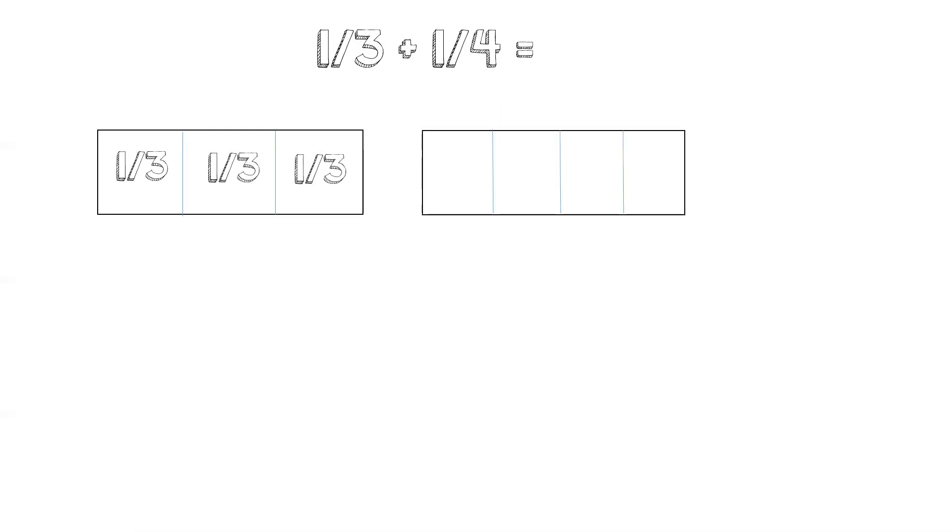Let's do another one. We have one-third plus one-fourth. Again, we have a three and a four, and we can't add them, because the denominators are different. So you can see here, these are thirds, and these are fourths. They're not the same, so we cannot add them.